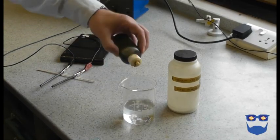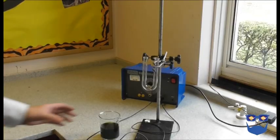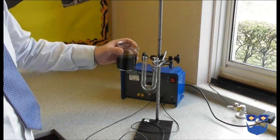Add some universal indicator. You need a strong enough color. Pour the electrolyte then into your U-tube and insert your electrodes.